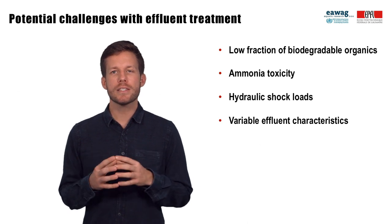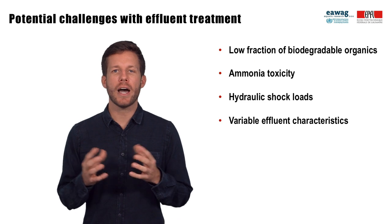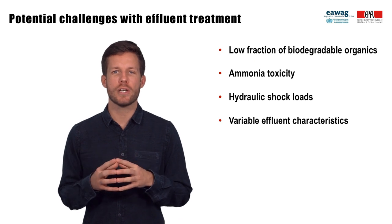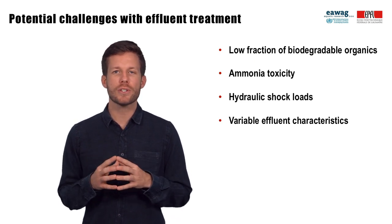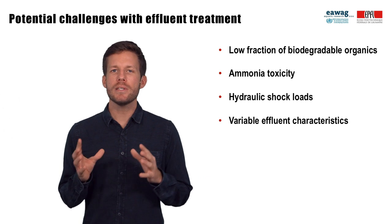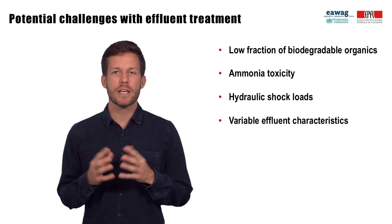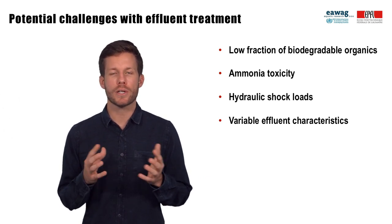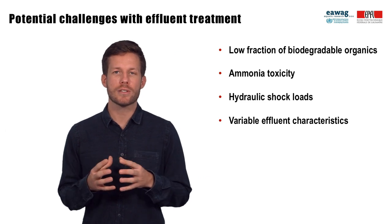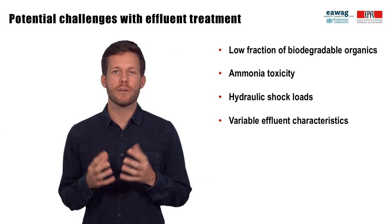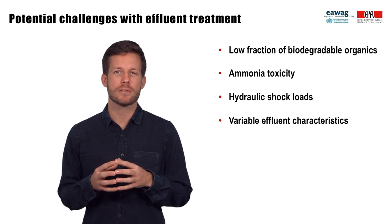As discussed at the beginning of this module, fecal sludge can have high ammonium concentrations. As a function of pH and temperature, this means that fecal sludge can have high ammonia concentrations that can be toxic to bacteria and algae and inhibit treatment processes — for example, in facultative ponds or anaerobic baffled reactors.